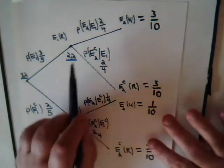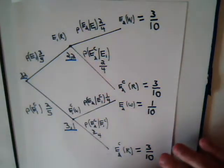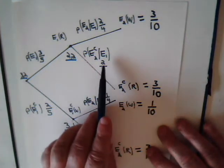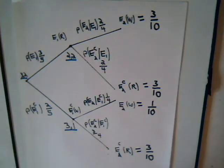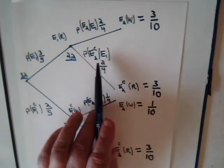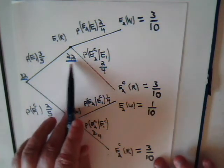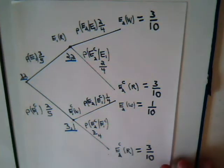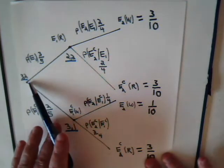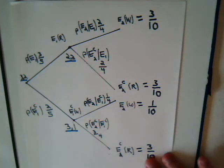Now, on the first selection it was a red ball, so we have two red and two white balls remaining. The conditional probability that the second ball selected is also a red ball is two-fourths or one-half. So the probability of first selecting a red ball and then selecting a red ball again on the second try is three-fifths times one-half, which is also three-tenths.